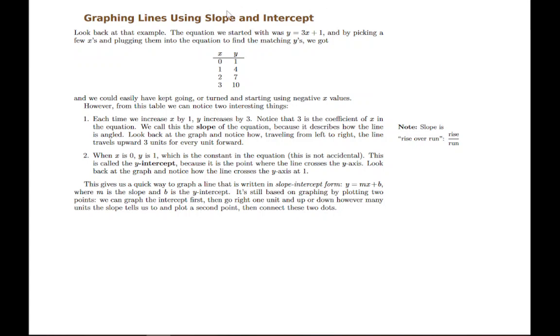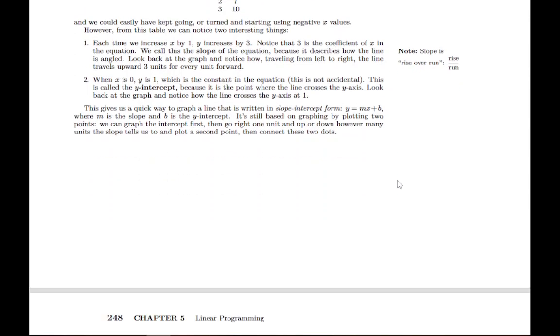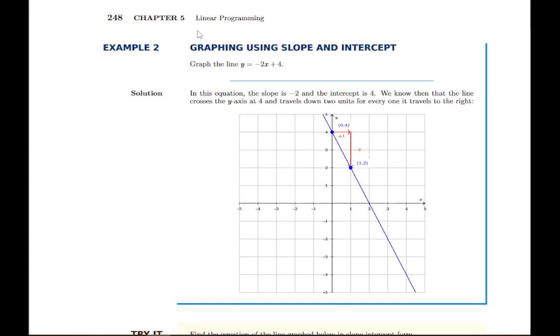Specifically, we can start by plotting the intercept—that's one point—and then the slope tells us how to find a second point, and then we can graph the whole line very quickly and easily. So that's what this description here goes through: picking out what the slope is, what the y-intercept is, and how to read them and then how to use them to graph a line.